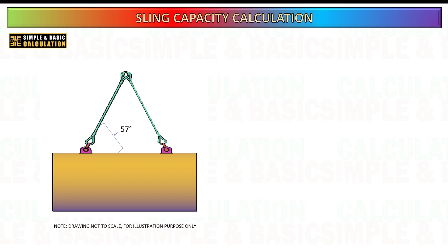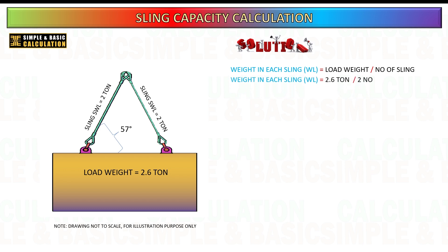In many practical scenarios, the reduction factor associated with sling angles is often overlooked during calculations. Typically, the procedure for determining the safety of a rigging setup involves several steps that may not fully account for this critical factor. Firstly, the load is divided by the number of slings used to determine the load distribution at each lifting point. This step provides the weight of the load that each sling is expected to support.